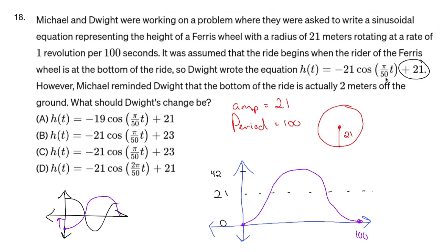Now π over 50, if you're wondering, where did that come from? This is a cosine function. So that's our frequency. And the way you get frequency is you do two π over the period, which is 100. And that simplifies out to π over 50, like so. Okay, so everything seems fine. Everything seems good.